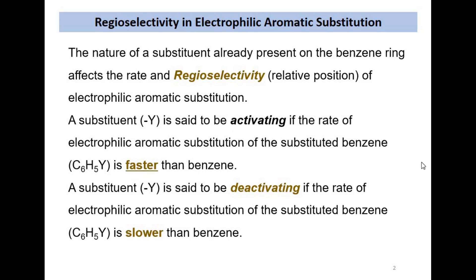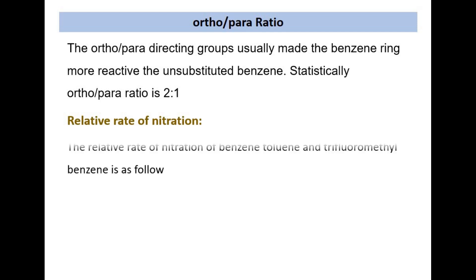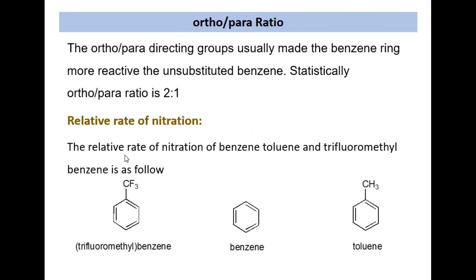The activating and deactivating nature of the benzene ring is related to its ortho-para ratio. If we look at the ring, the ortho positions are twice as numerous as the para positions — normally there are two ortho positions and one para position. This statistical ratio we use to describe the relationship between statistical positioning and real reaction outcomes.